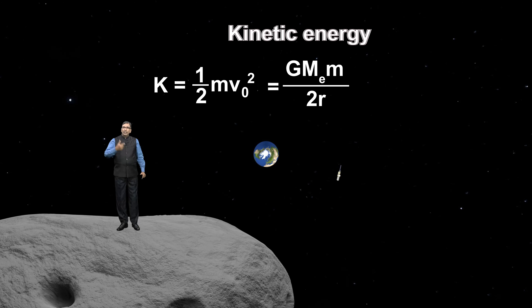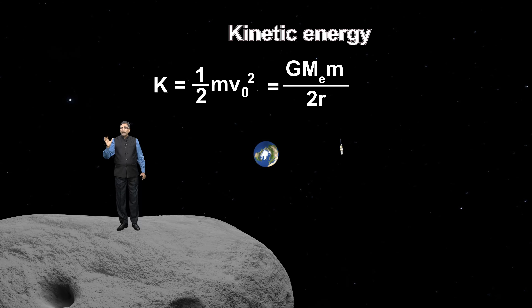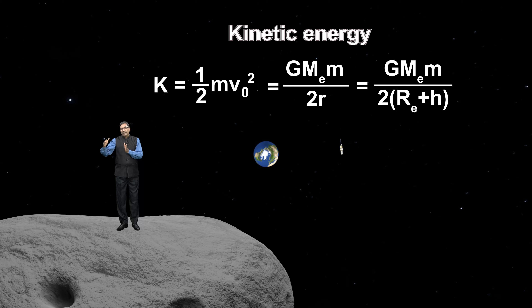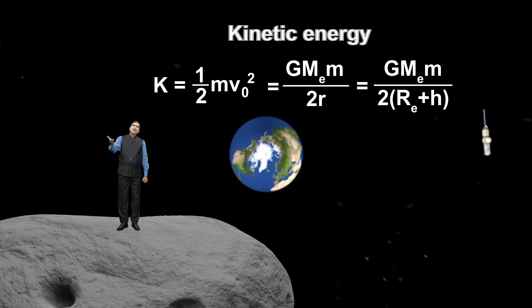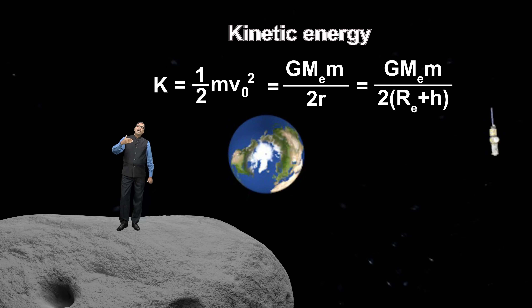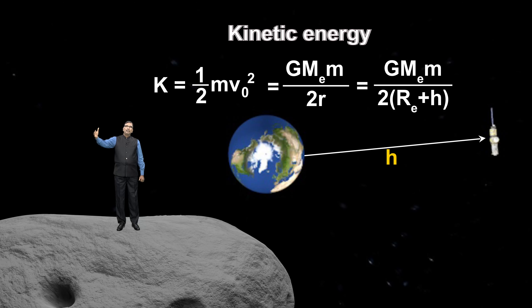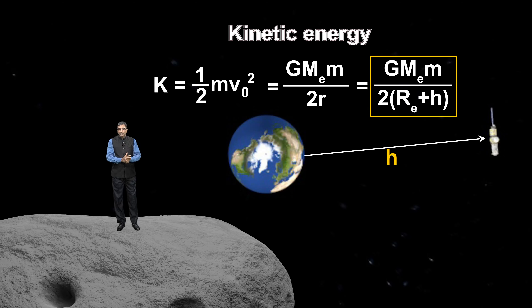This r is the radius of orbit of the satellite. Height means distance from the Earth's surface — that is the height. So this is the kinetic energy of the satellite.